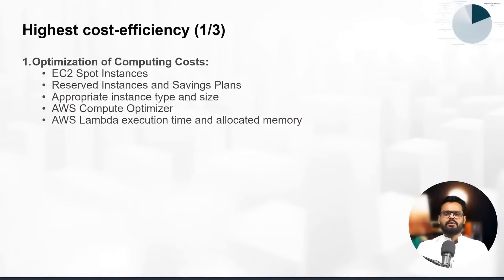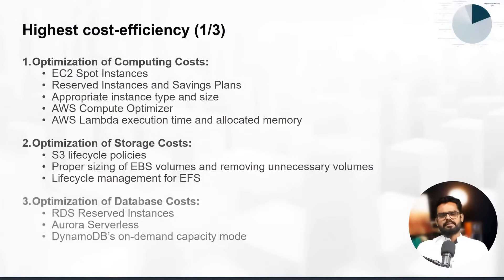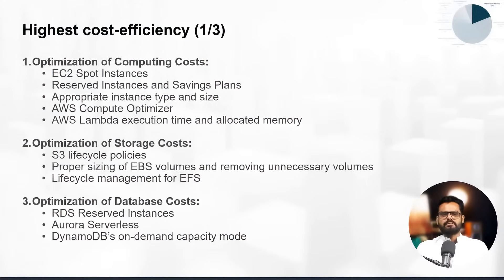You can achieve significant cost savings by using spot instances. However, since they can be interrupted, they are typically used for scenarios like batch processing that only takes a few minutes. You can get greater discounts by paying upfront with reserved instances or saving plans. For storage costs, you may encounter questions about cost-effective options like S3 storage classes and lifecycle policies. For database costs, the solution includes purchasing reserved instances for RDS.